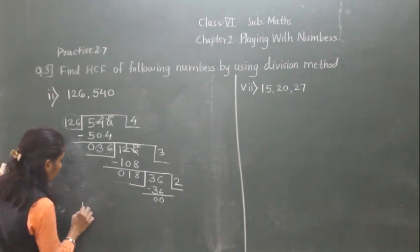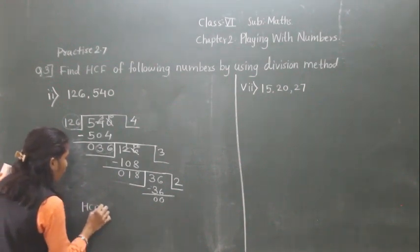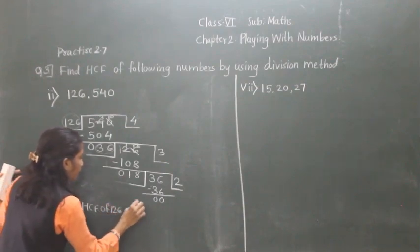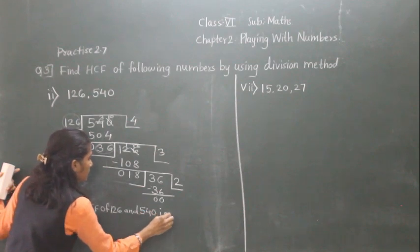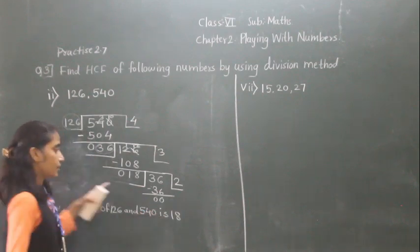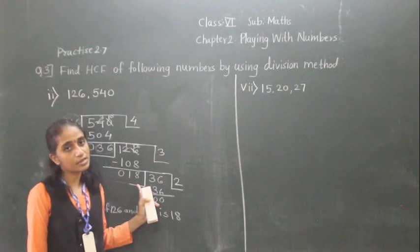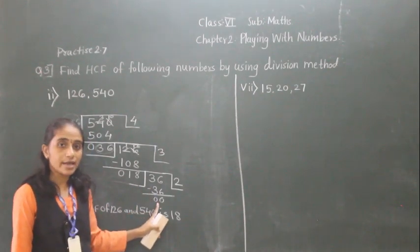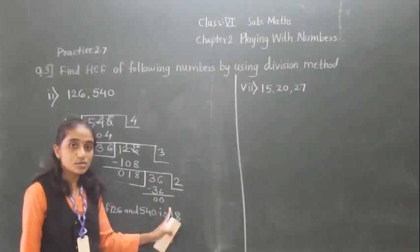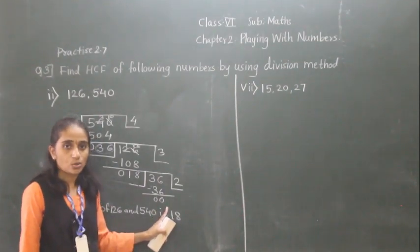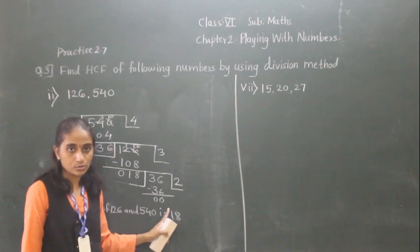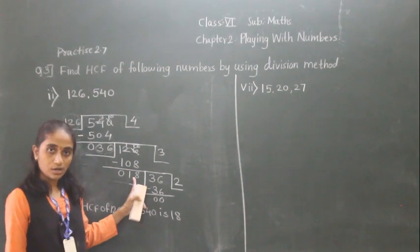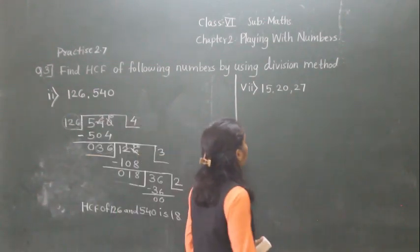So the HCF of 126 and 540 is 18. The last divisor is the HCF. We continue the division until we get remainder 0, and when we get 0, that is when we find the answer.